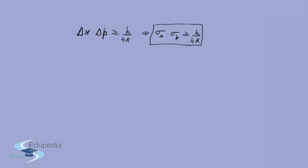This result is not just true for position and momentum — it is true for any two operators that do not commute. We've seen what the commutation of two operators is previously, and we'll see that again in this video. So let's begin with the proof. We'll start with any two operators A and B, and then show how the result applies specifically when operator A is position and operator B is momentum.